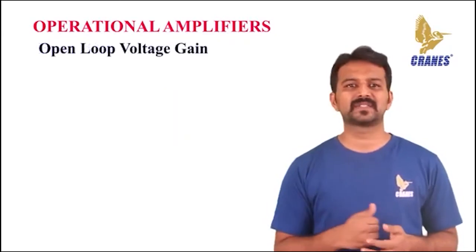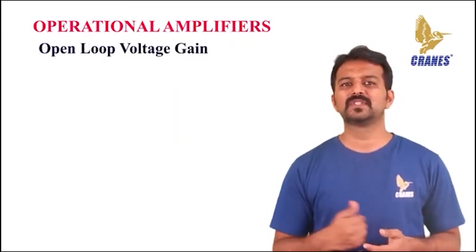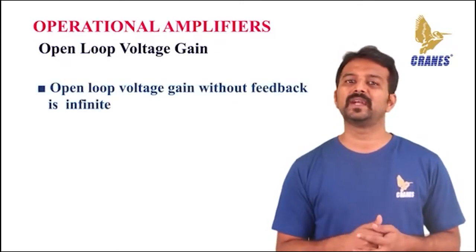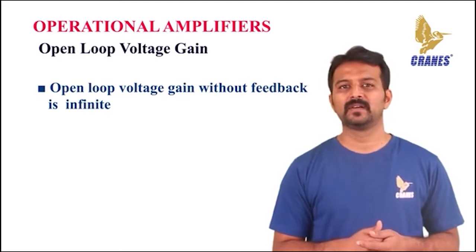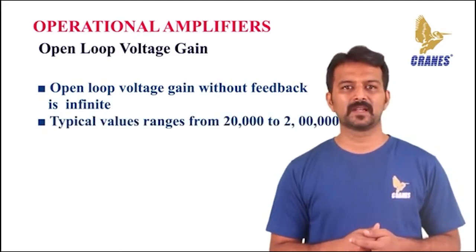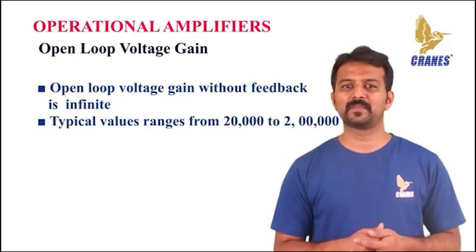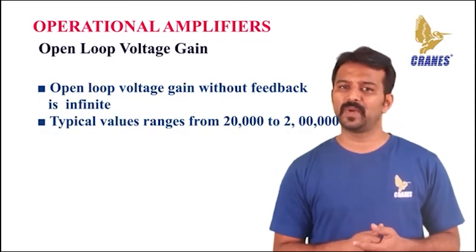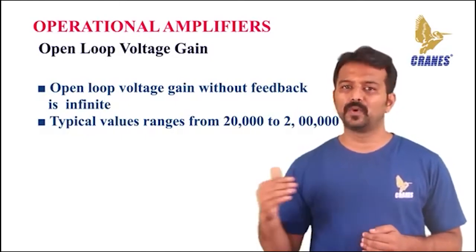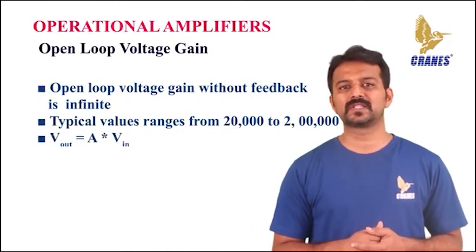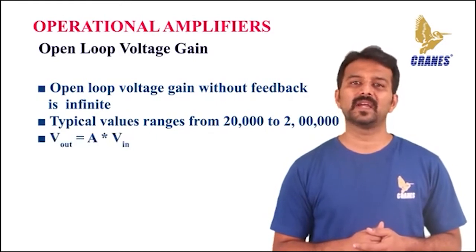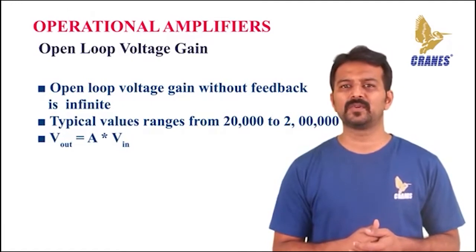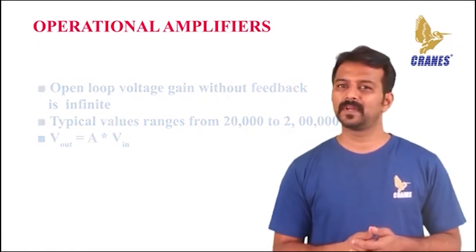The next characteristic is open loop voltage gain, denoted as A. The open loop voltage gain without any feedback for an ideal op-amp is infinite. But typical values of open loop voltage gain for a real op-amp range from 20,000 to 2 lakh. If the input voltage is Vin and A is the voltage gain, then the output voltage Vout equals A multiplied by Vin. For an ideal op-amp, the gain is infinite.